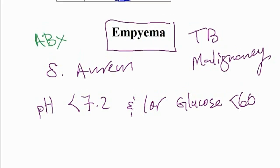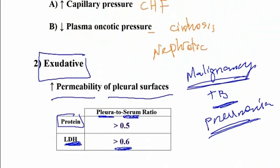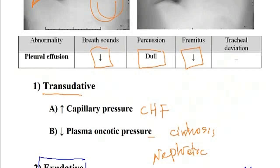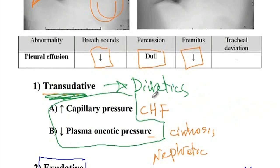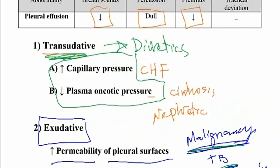For exudative pleural effusions, you must treat the underlying disorder such as malignancy, tuberculosis, or pneumonia. For transudative pleural effusions, since they result from excess fluid accumulating in the pleural cavity, you can provide diuretics. You can also perform thoracocentesis to remove the fluid.